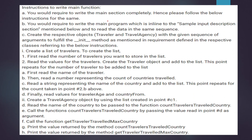Now let's look at the instructions to write the main function. We have to write two classes and also complete the main section. We need to read the main program inline with the sample input description and read the data in the same sequence. Then create the respective objects — traveler and travel agency — with the given sequence of arguments, fulfilling the init method as defined in the respective classes.